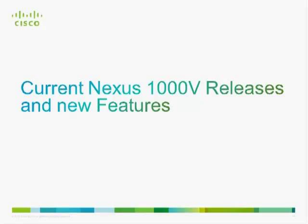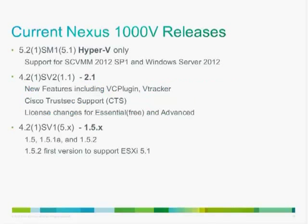Let's talk about the current releases and new features coming for the Nexus 1000V. Yesterday we released Nexus 1000V for Hyper-V — it is now a shipping product after more than a year in alpha, pre-beta, and beta. Customers running Hyper-V can now download and use the official product. The Hyper-V code runs on Cisco Nexus OS 5.x, which is a slightly different code version than ESX. The goal is to eventually get Hyper-V and ESX code on the same code tree.